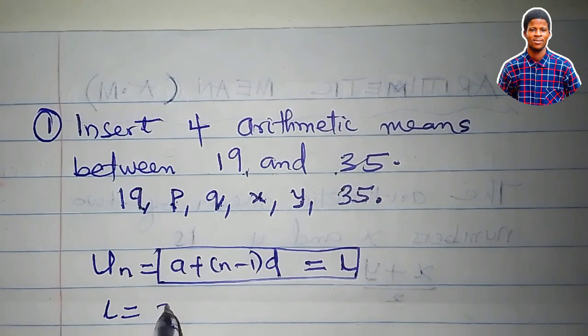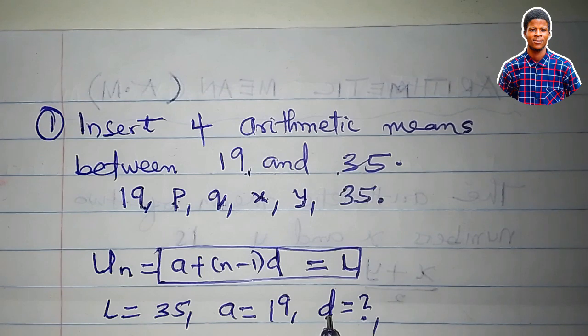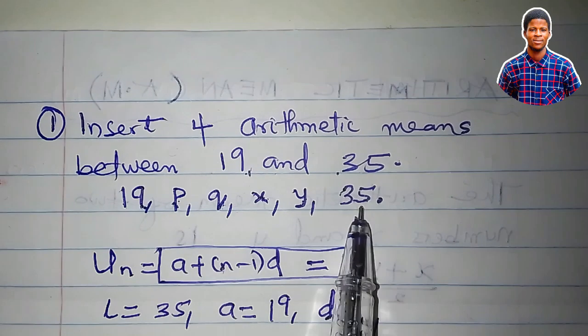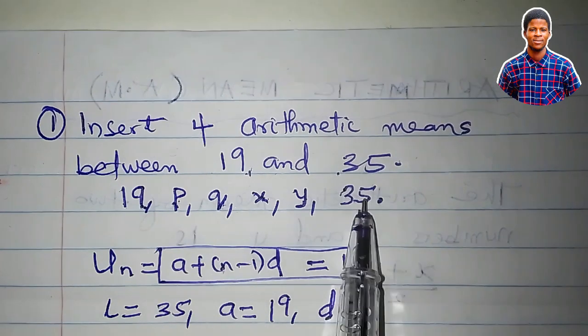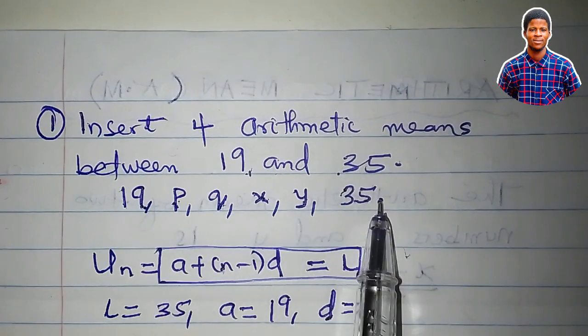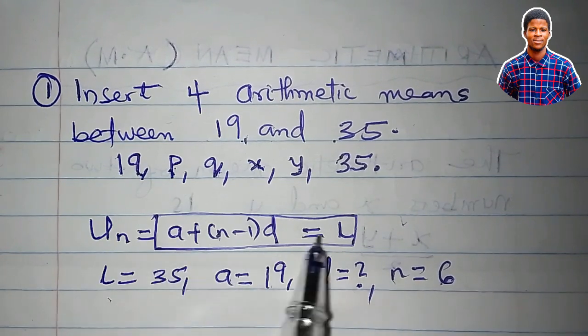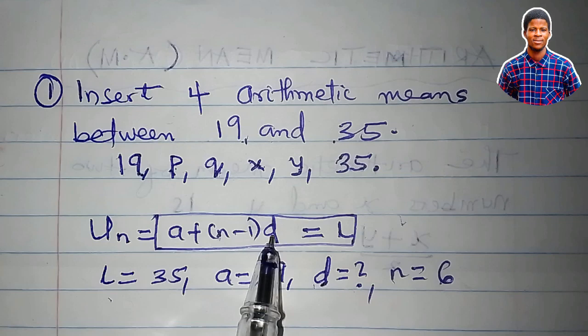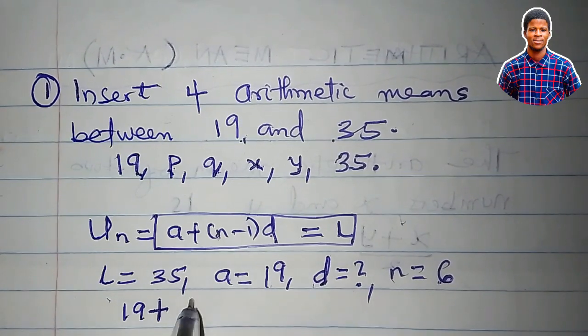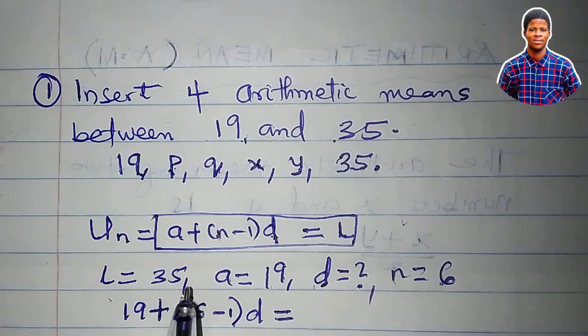If we can get the common difference, then our job is done. Let's go ahead. What is the last term? The last term is 35. What is the first term? The first term, which is A, is 19. We are attempting now to find the common difference. What would be n? n is the term number. The term we are considering now is the last term, 35, and 35 is in number 6: 1, 2, 3, 4, 5, 6. Therefore n will be 6, since 35 is in the sixth position in this series. So what we have to do now is to plug in these values into this equation and get the value of D.